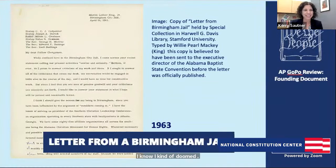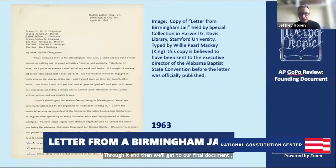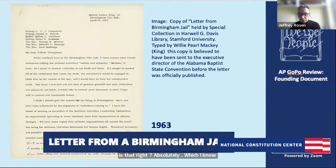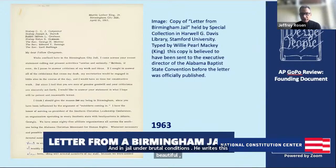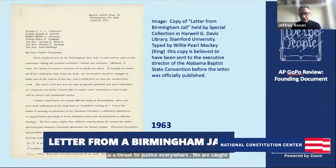The Letter from Birmingham Jail was written in 1963. Dr. King is defending the strategy of nonviolence. Thirteen days earlier there were boycotts and sit-ins in Birmingham. King was arrested on April 12th for his nonviolent protests, and in jail under brutal conditions he wrote this beautiful, sublime, inspirational letter addressing his critics. He says: 'Injustice anywhere is a threat to justice everywhere. We are caught in an inescapable network of mutuality, tied in a single garment of destiny. Whatever affects one directly affects all indirectly. Anyone who lives inside the United States can never be considered an outsider anywhere within its bounds.'